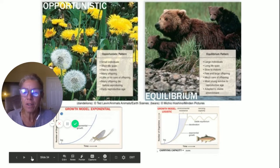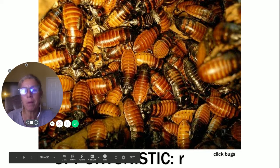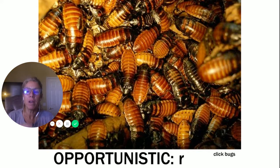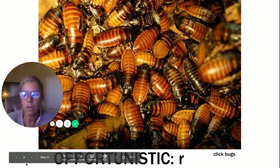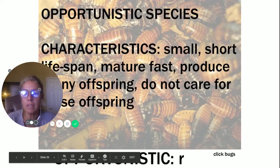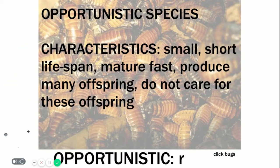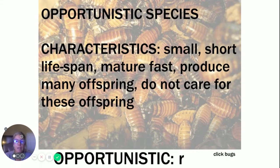Looking at the opportunistic pattern — here's a bunch of cockroaches — this is maximum R. They are trying to maximize their growth rate. Characteristics of the opportunistic species: they tend to be very small, have a very short lifespan, so they mature quickly. They produce many offspring and usually don't survive to take care of those offspring.